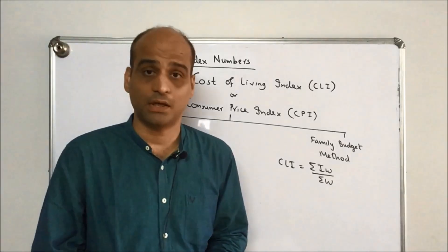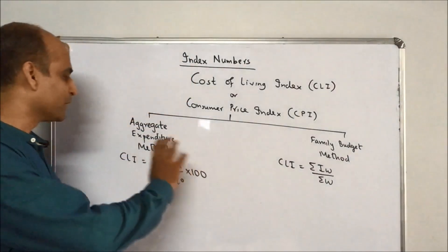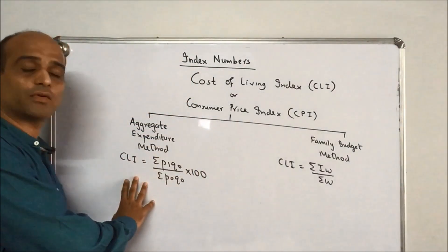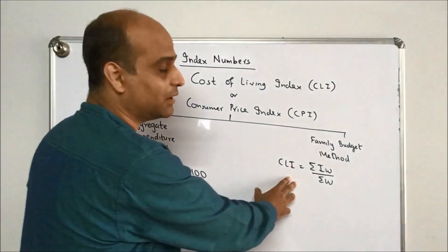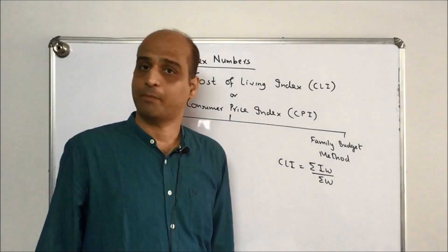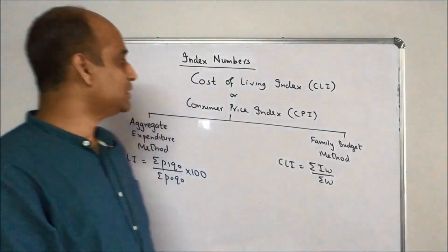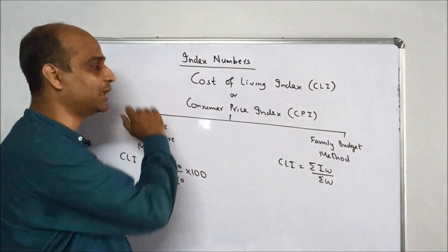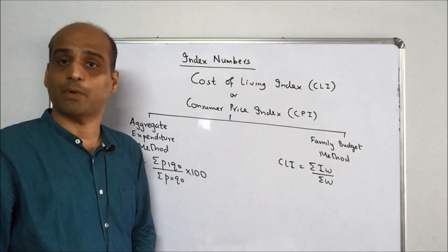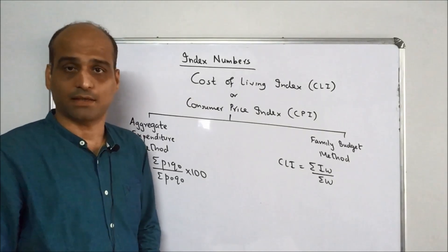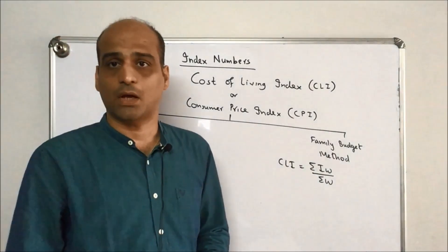This is the same formula we studied in the Weighted Arithmetic Mean of Price Relatives. So no new formulae here — the Laspeyres formula applies to the first method, and the Weighted AM of Price Relatives applies to the second. This covers the Cost of Living Index, also called the Consumer Price Index.